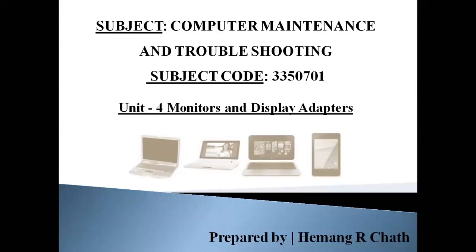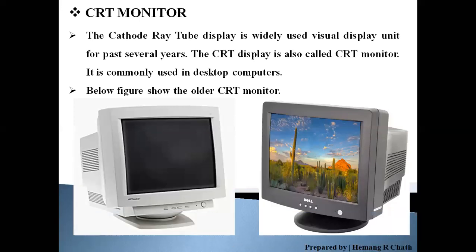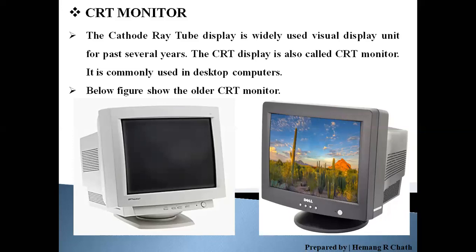Unit 4: Monitor and Display Adapter. Starting with CRT monitor. CRT means cathode ray tube display. This is a widely used visual display unit for the past several years. CRT display is also called CRT monitor. It is commonly used in desktop computers. As you can see earlier, the monitor is a CRT monitor — the technology used to produce the image onto the screen is CRT, cathode ray tube. On the other side there is a cathode ray tube.